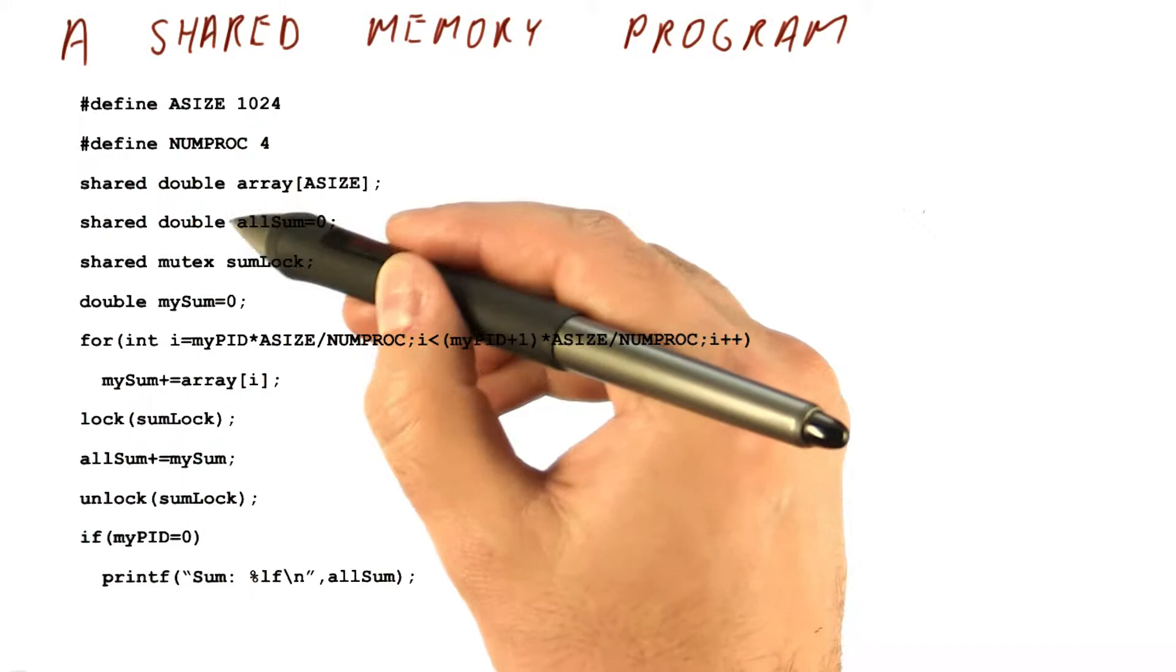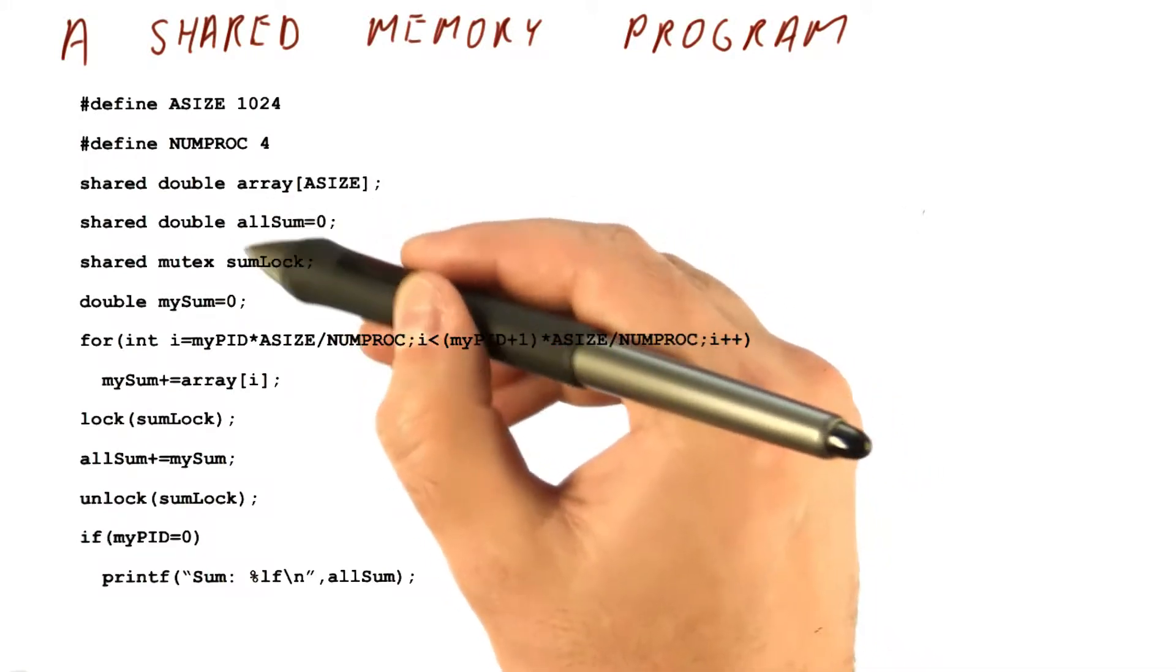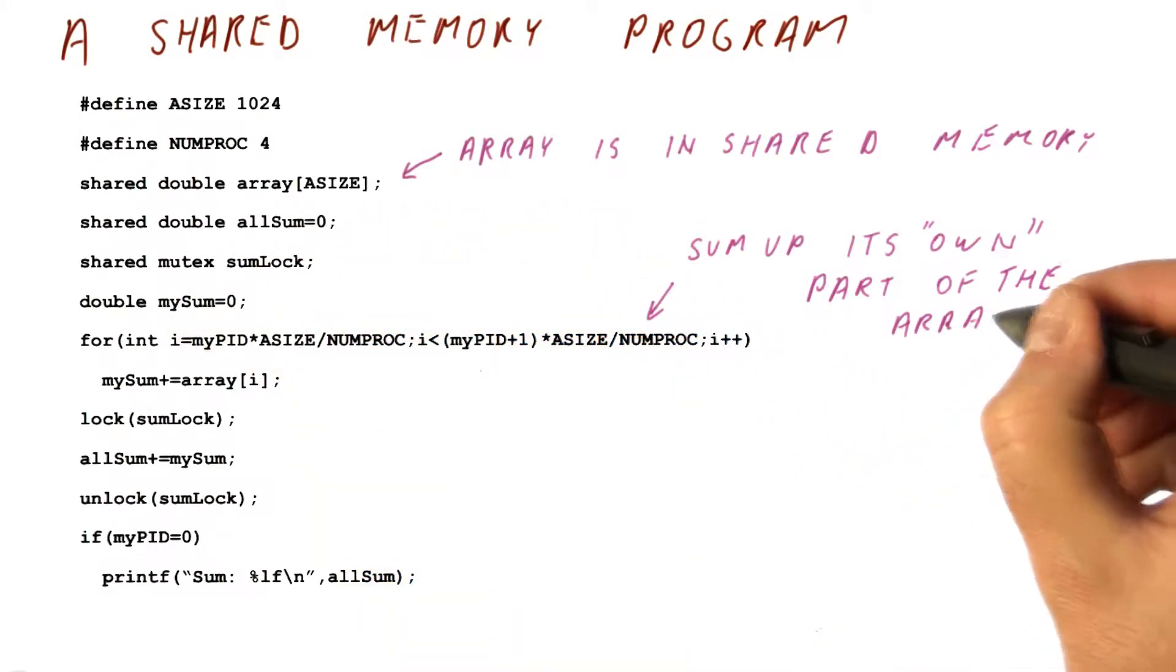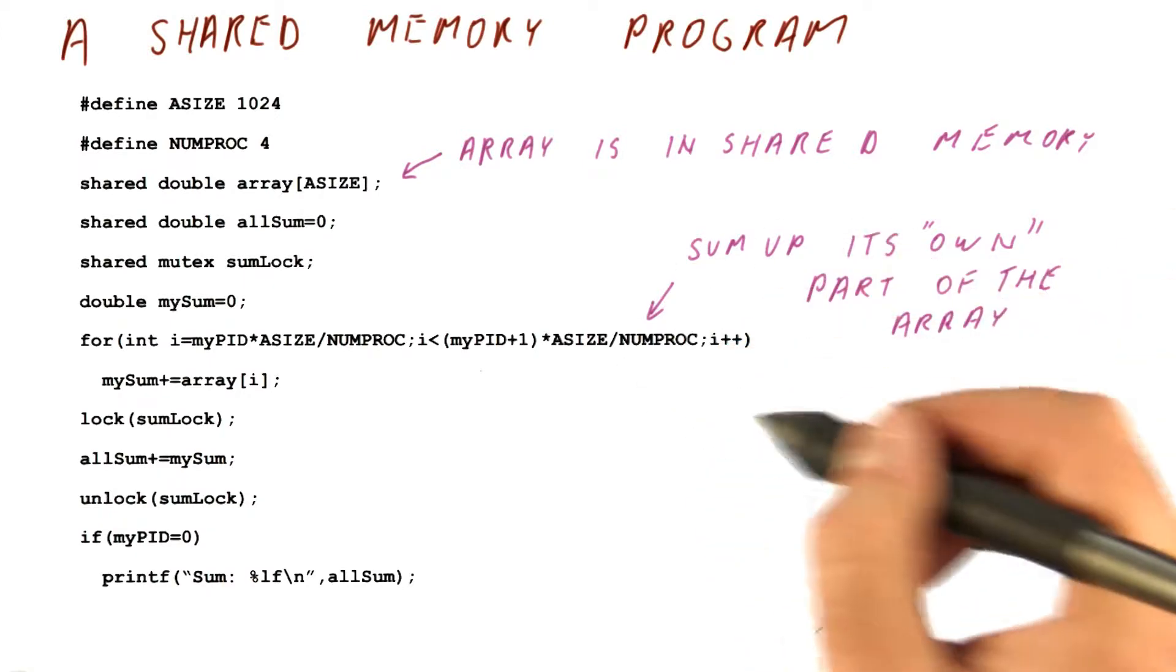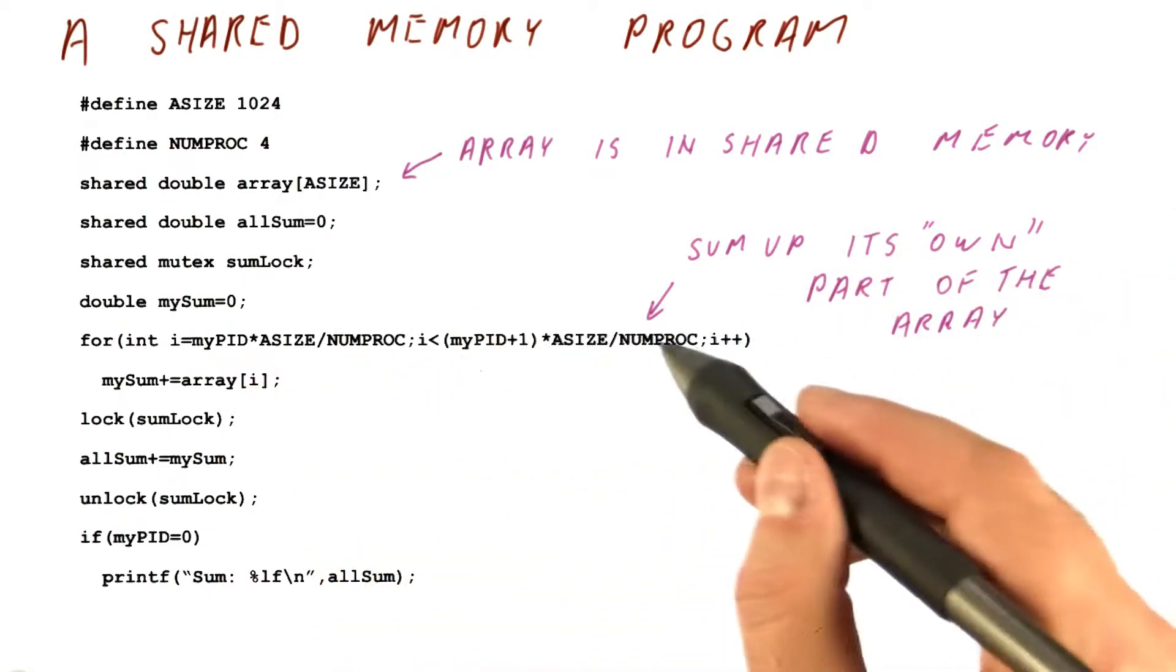We will have the total sum, and each of them will be computing its own sum. So because this array is in the shared memory, each processor will sum up its own part of the array.